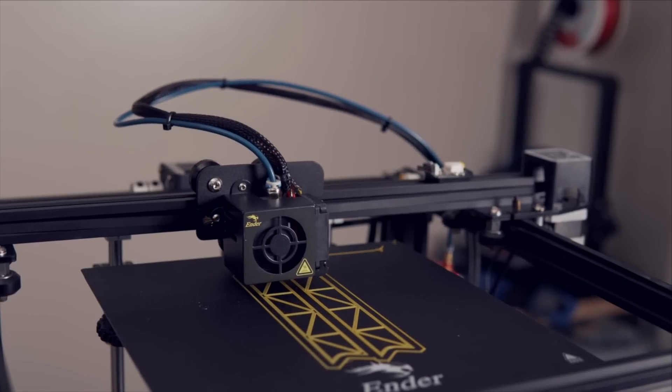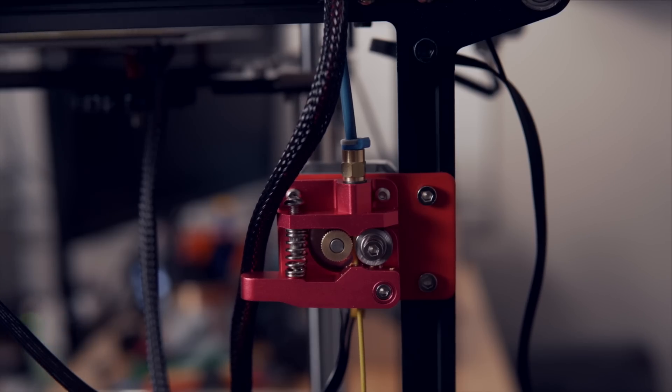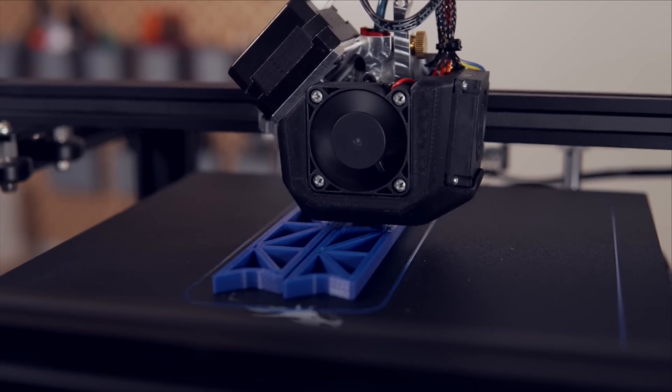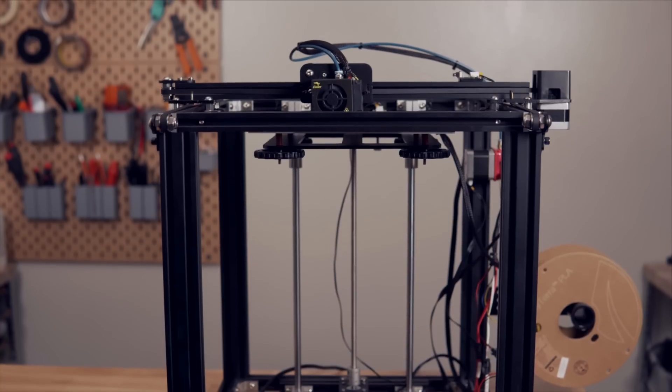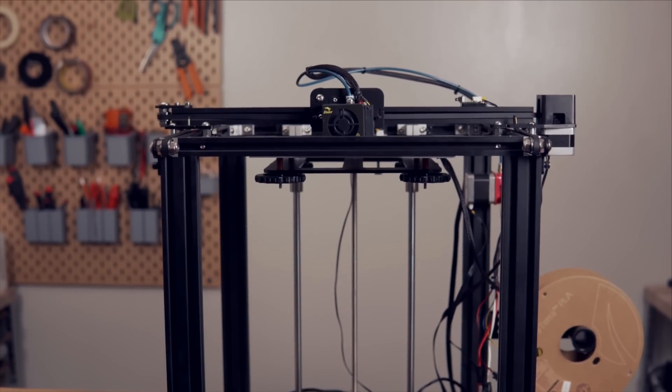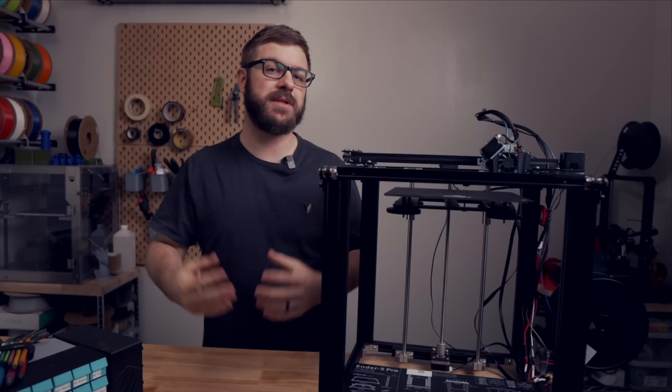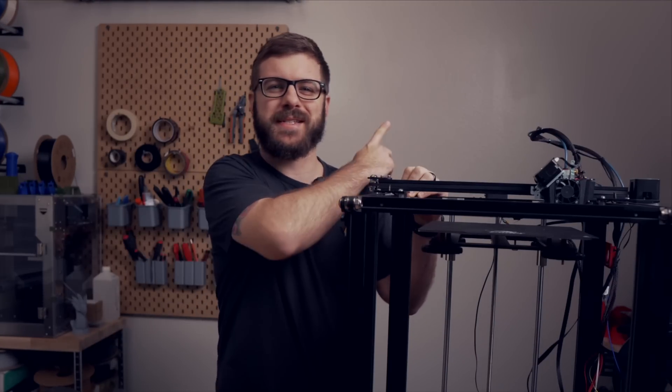In today's video, we will be converting the stock Ender 5 Pro from its Bowden extruder and PTFE lined hotend to the NG direct drive extruder with all metal hotend. Although we're specifically installing this on the Ender 5 Pro, the installation process will be very similar on the standard Ender 5, the Ender 5 Plus and Ender 5 style clone printers. So without further ado, let's get right into today's video.